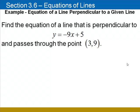Now for a similar example, except we're going to be working with a perpendicular line. We want the equation of a line that's perpendicular to y equals negative 9x plus 5 and passes through the point (3, 9).